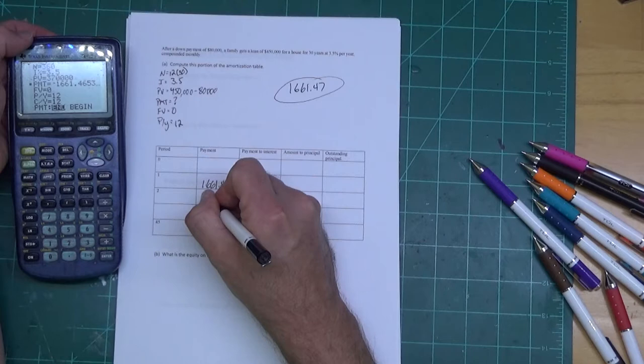Alright everyone, I have an amortization problem in front of me. During the homework session we just did the problem and didn't take time to explain it. Now I need to explain it so you know what you're doing. It says after a down payment of $80,000, a family gets a loan of $450,000 for a new house for 30 years at 3.5 percent per year compounded monthly. Compute this portion of the amortization table. Notice it goes 1, 2, and then 45 - teachers like to do that on a test just to be mean. In order to start this I have to find the payment.